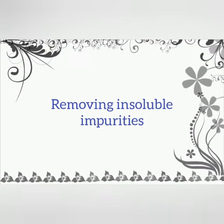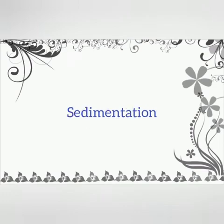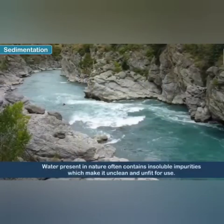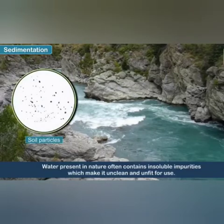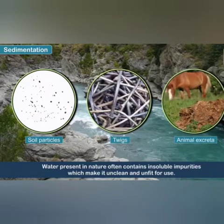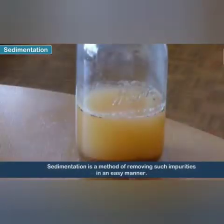Next, we discuss about removing insoluble impurities in water. The first method is sedimentation. Water present in nature often contains insoluble impurities like soil particles, sticks and animal excreta, which make it unclean and unfit for use. Sedimentation is a method of removing such impurities in an easy manner.